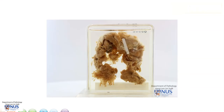To summarize, this is the gross appearance of the diffuse form of tenosynovial giant cell tumor, which is known as pigmented villonodular synovitis. It is characterized by this finger-like or frond-like appearance, sometimes with brownish or yellowish areas.